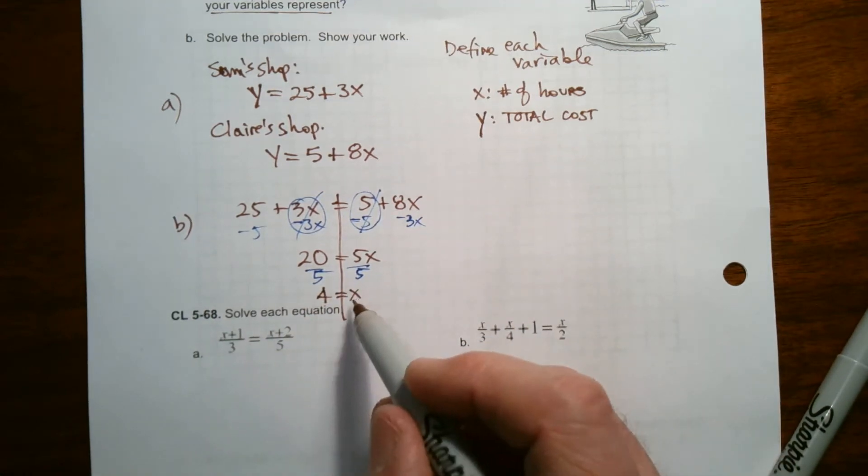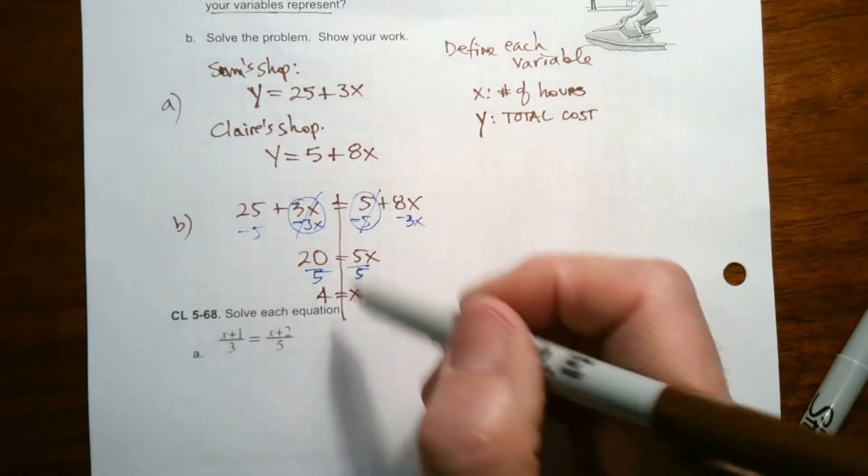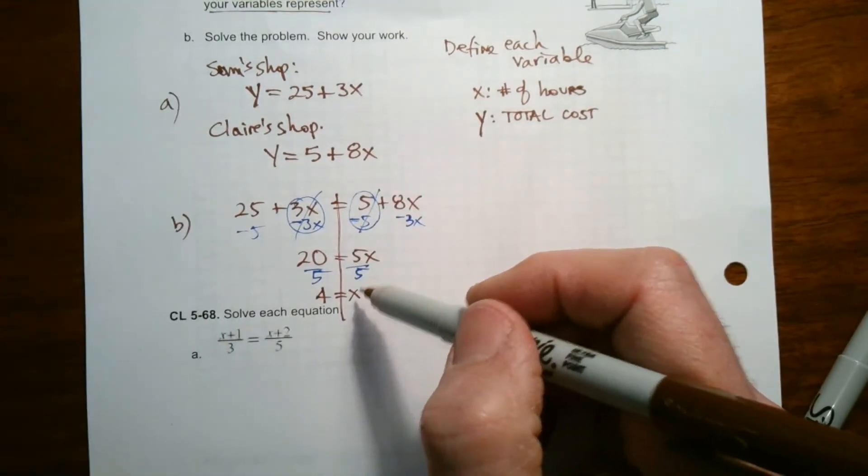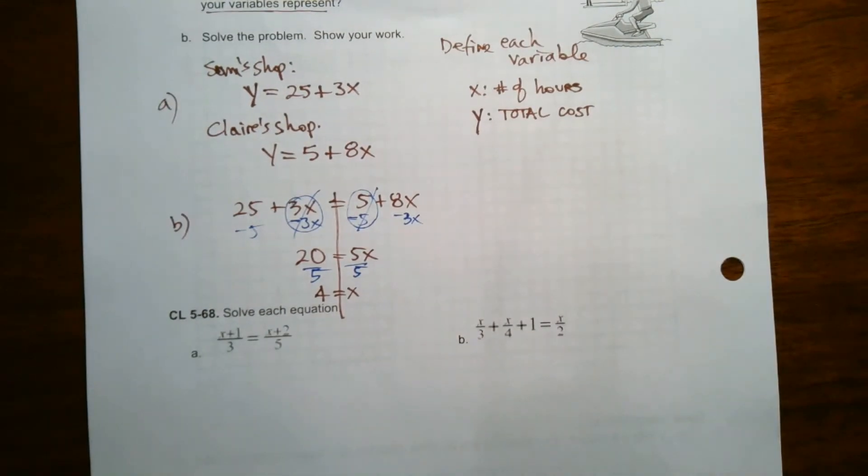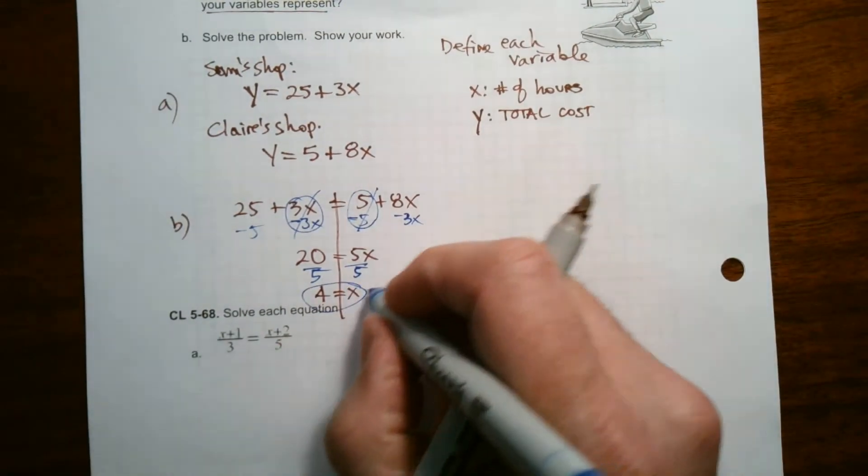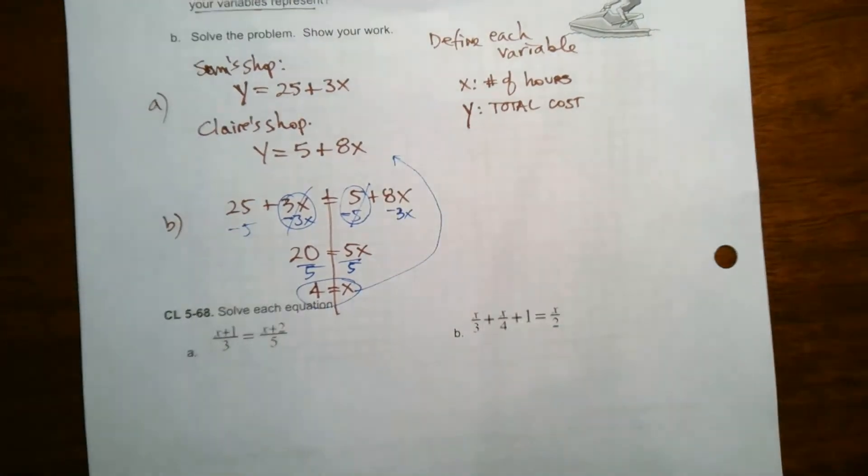So what I'm determining is I think at four hours, based on my algebra at four hours, their costs would be the same. So let's double check it. So I then, in order to check this out, I take that four hours and I plug it back into each of those equations up there.